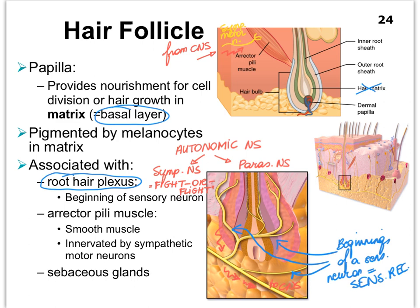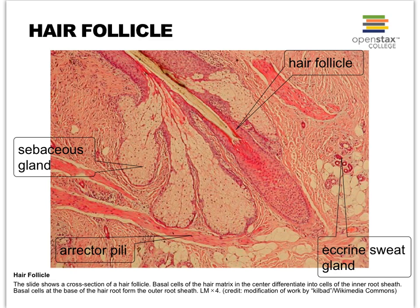Our hair follicles are also associated with oil glands — sebaceous glands. Here is a microscope slide of a hair follicle that actually has a hair in it, with a goldish look. Often when you look at hair follicles on slides they may not have a hair in them. These big cloud-like structures are oil glands. These very long, skinny, reddish structures that directly connect to the hair follicles are your arrector pili muscles.